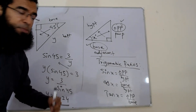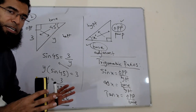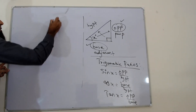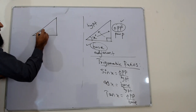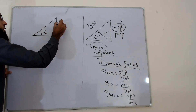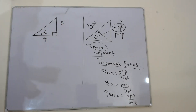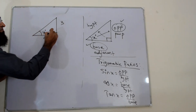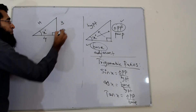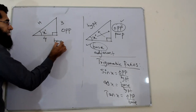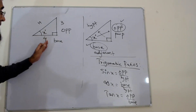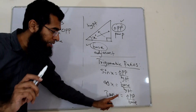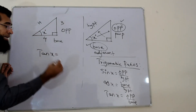Now let's see how you find the angle. Let's take an example where the angle x is unknown and two sides are given — let's say 3 and 4. You have to find angle x. It's a right angle triangle, so first step: label the sides. This is your hypotenuse, the 90 degrees opposite side. Angle ke saamne wali side is the opposite, and the remaining is the base. We have base given and opposite given, so base and opposite — we use tan x.